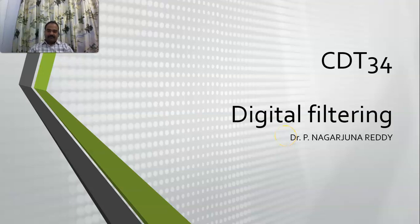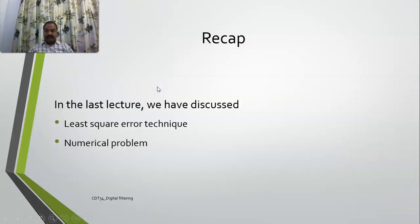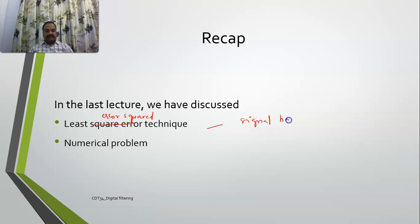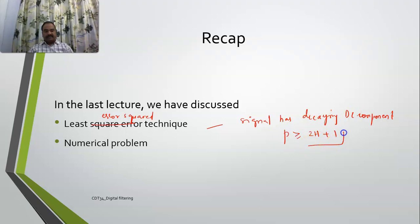Good morning. Today we will discuss digital filters. In the last lecture, we covered the least error square technique and saw that this method is helpful when the signal has a decaying DC component. We also saw that the number of samples to be considered must be greater than or equal to 2h plus 1, where h is the number of harmonics to consider along with your DC component. We also saw that the higher the number of samples you take, the more effective the results will be.